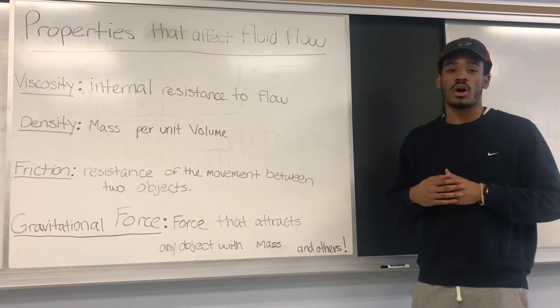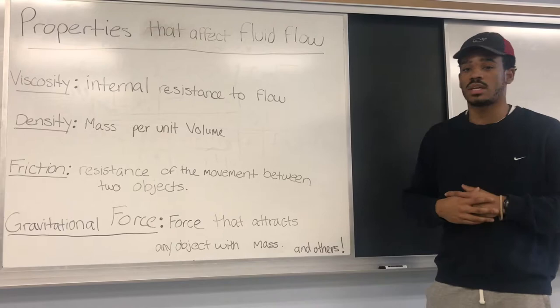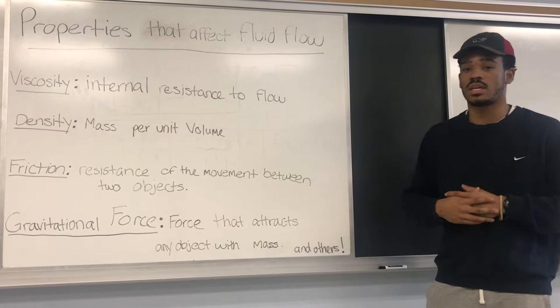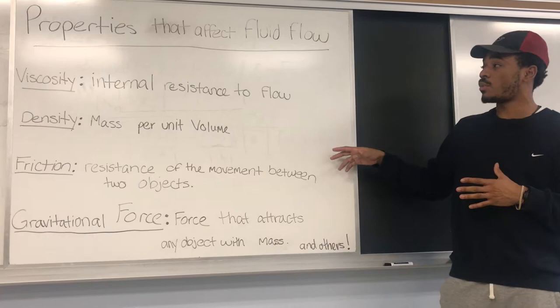The next property we're going to look at is density, which is the mass per unit volume — you can think of it as how much of something takes up a certain space. The next property is friction, which is the resistance of movement between two objects; it's the force that prevents things from moving on forever. Gravitational force is the last property we're going to look at, and it's the force that attracts any object with mass and causes falling of objects.